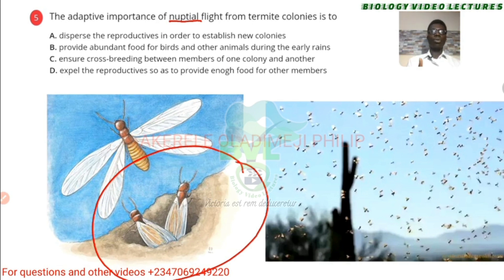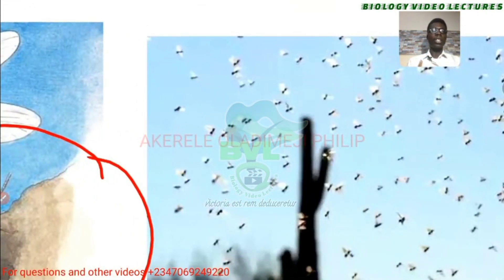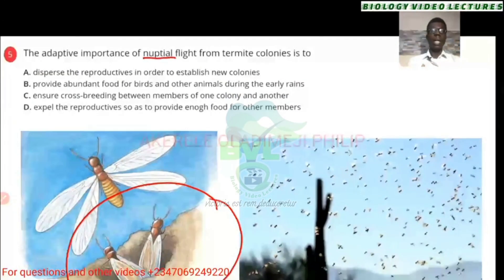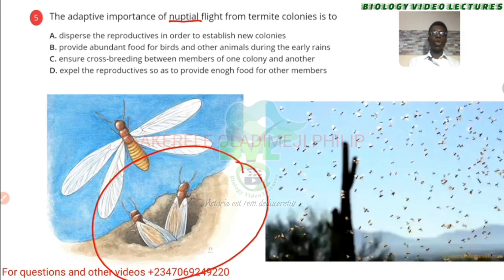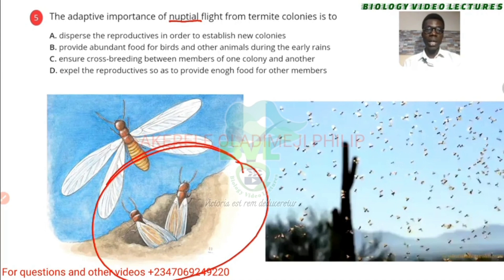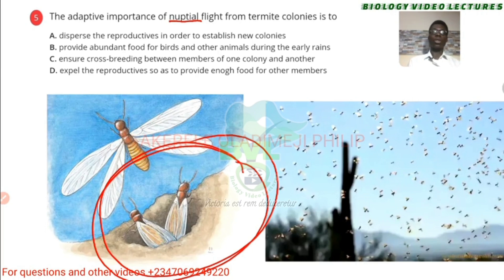During the rainy season, when the nuptial flight happens, you see something like this. The next time you see that, that's what it is. They fly up there and come down — you'll probably see two of them falling together. Each of those two are potential queen and king. They are the ones to start up a new termitarium, because the colony where they are is overly filled and resources won't be enough for everybody.